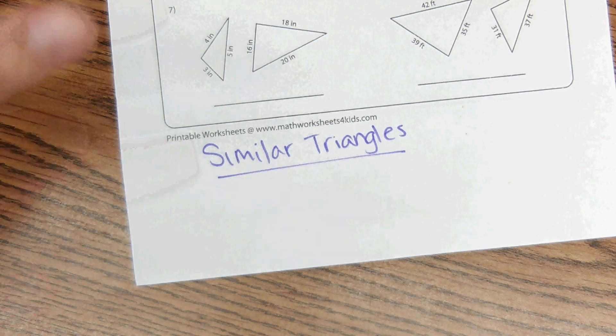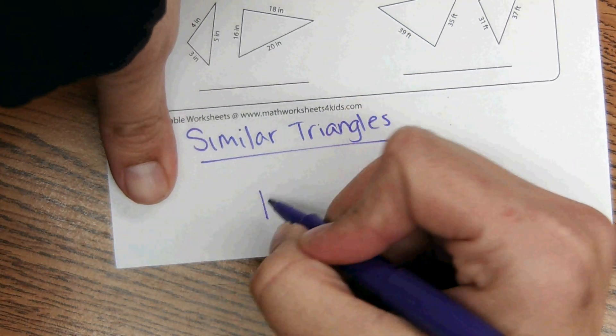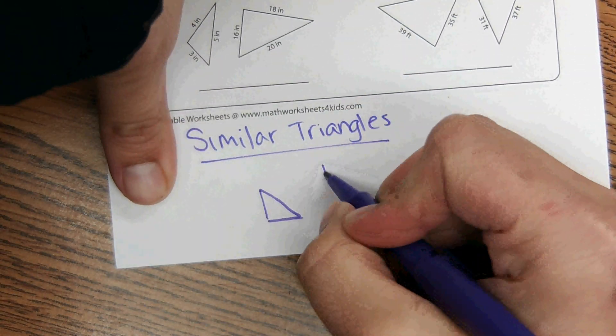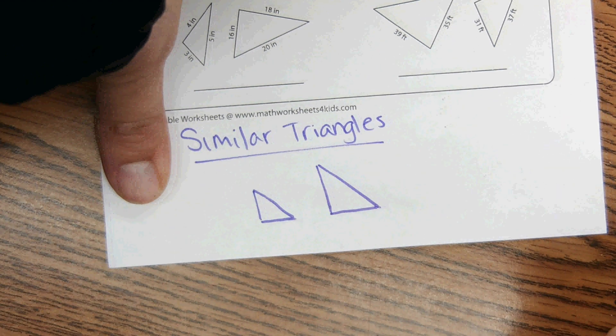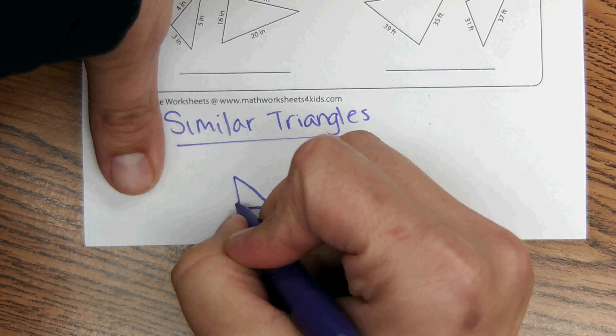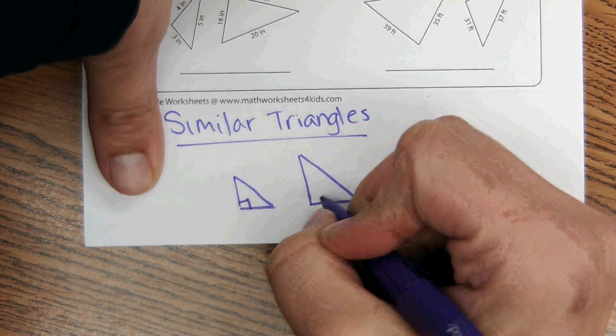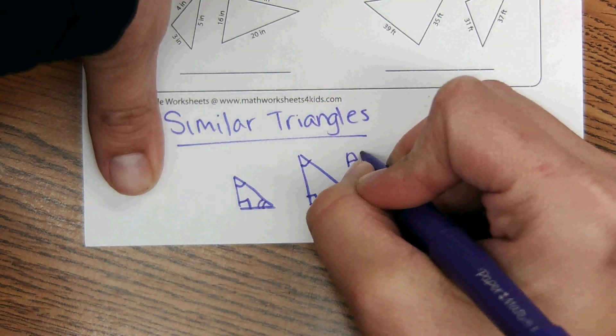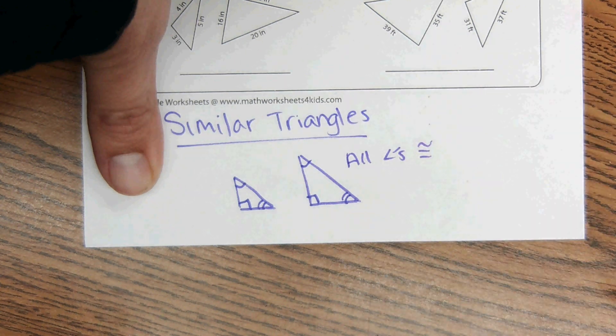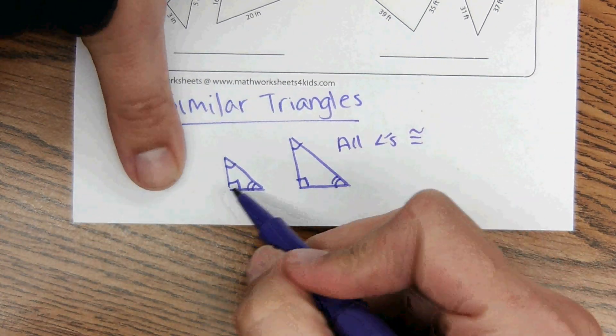Similar triangles. Okay, so similar triangles, they're not congruent, but they are proportional. So like if we have a triangle like this, we have a triangle like this. And in similar triangles, all the angles are the same measure. So this equals this, and this equals this. So all angles are congruent.